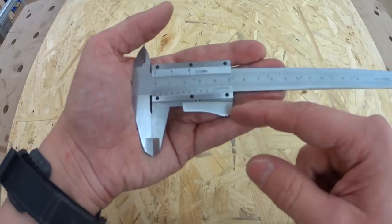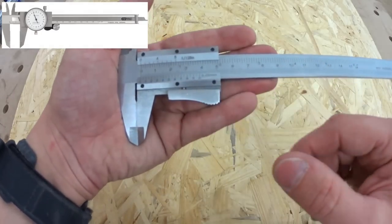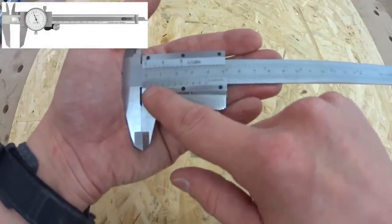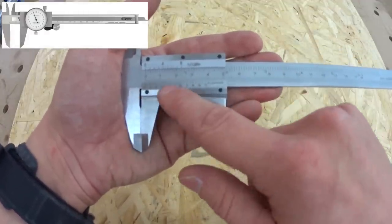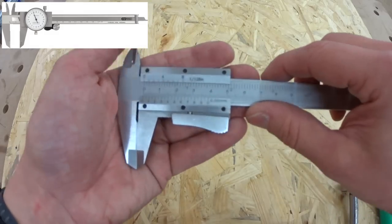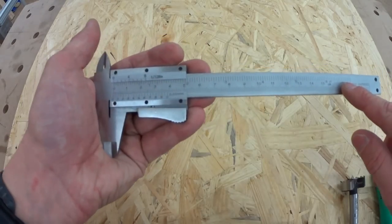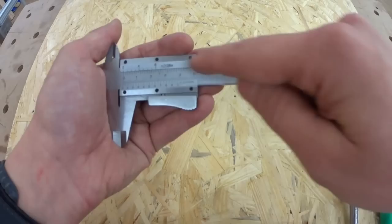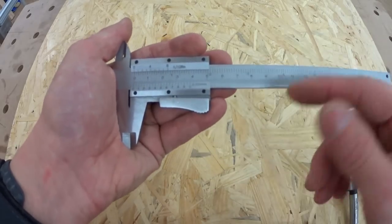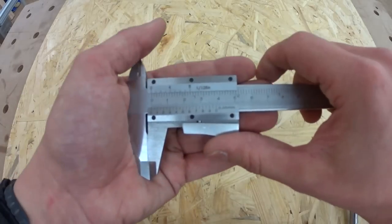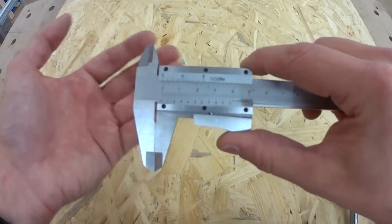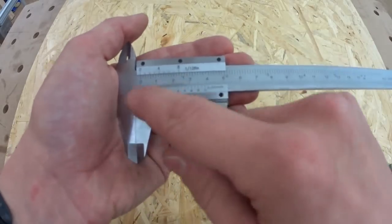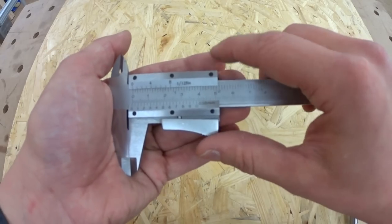Also available are calipers with a dial. You have your dial here, which makes the same as this vernier scale. You read out your full millimeters from this scale and every millimeter or so, the dial turns one turn. You measure more accurate to 0.01 millimeter. And it's way easier to read out because you just have to add this to your main measurement.